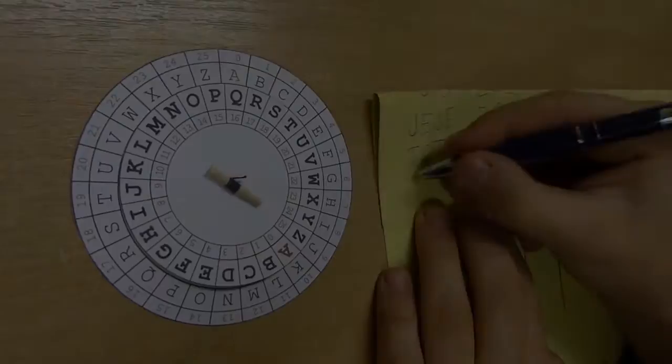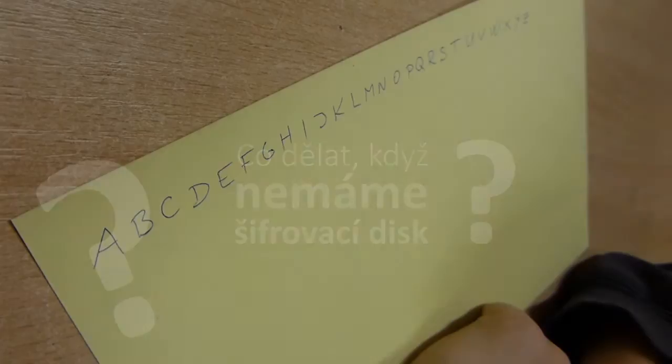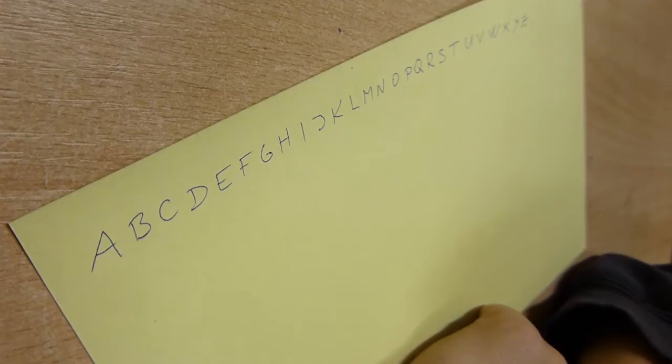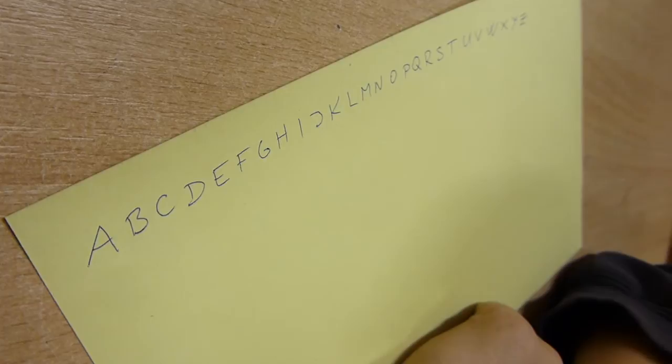Nic složitého. A co dělat, když nemáte šifrovací disk? Stačí si na kousek papíru napsat do jednoho řádku normální, tedy otevřenou abecedu, a pěkně pod ní abecedu šifrovou, která bude posunutá.